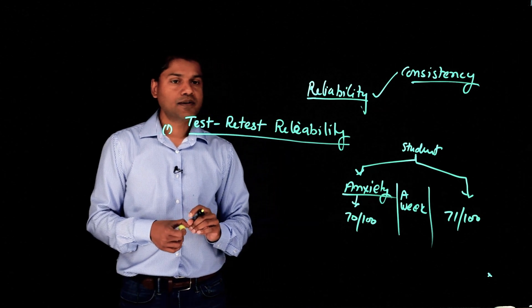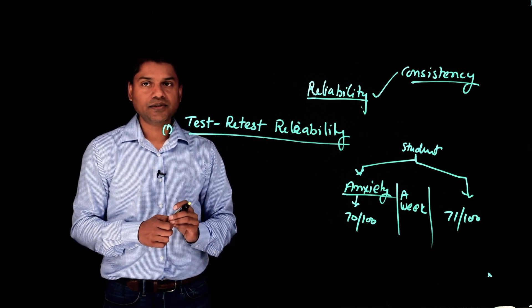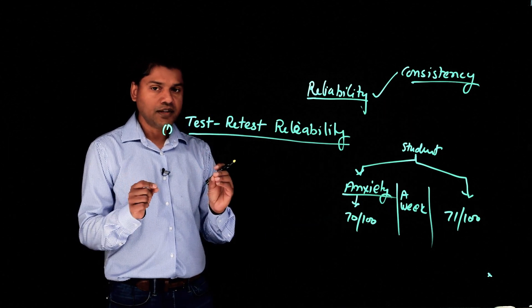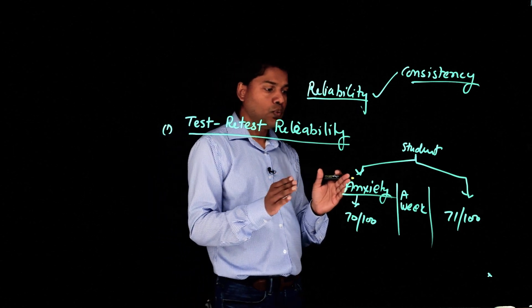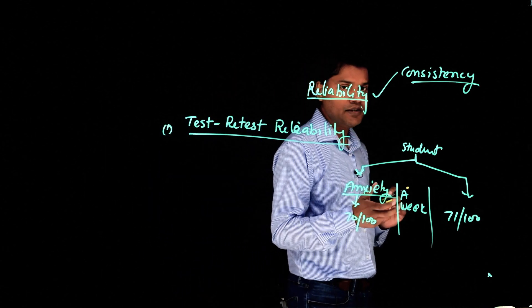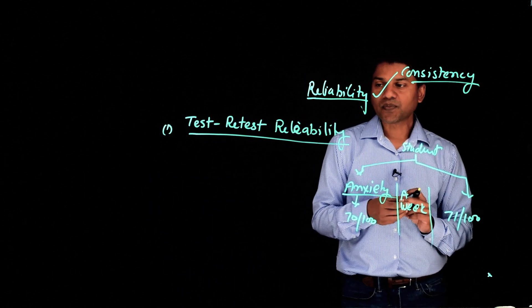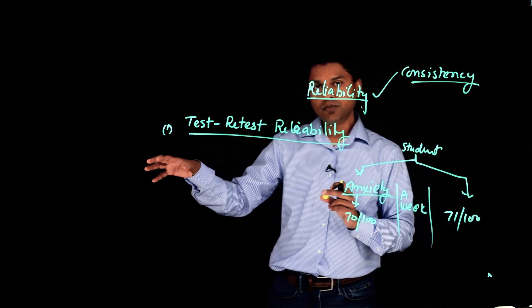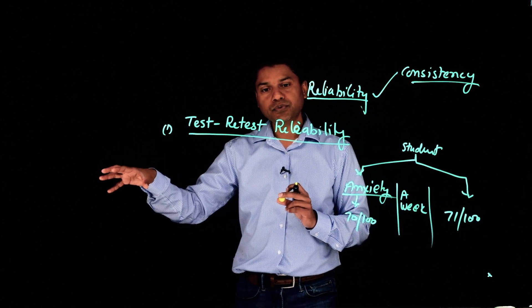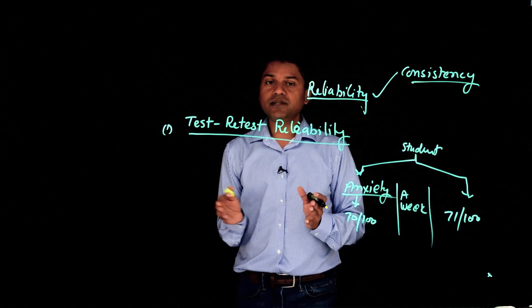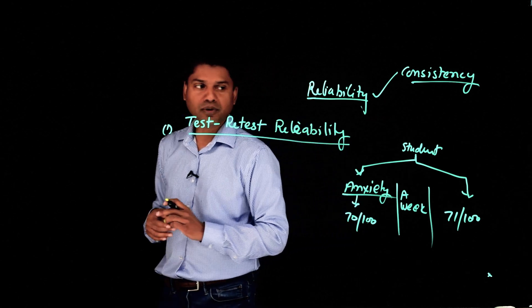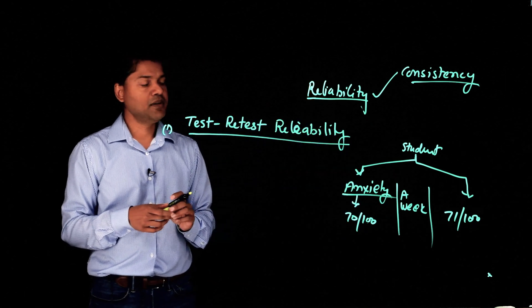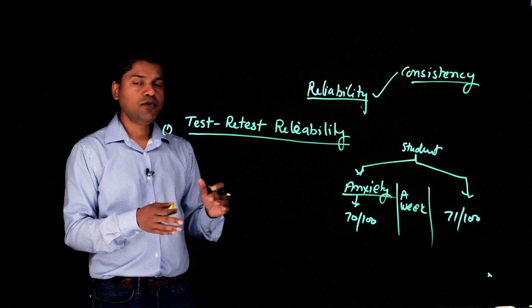So that's what test-retest reliability is. If we want to measure the reliability of a test, a scale, we give this test to a group of people or individual, and then we give the same test after some time gap. It could be a week. It could be two weeks. It could be maybe a couple of days. And then we measure.